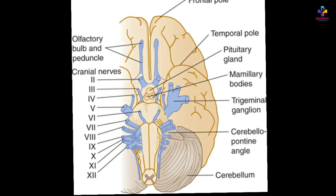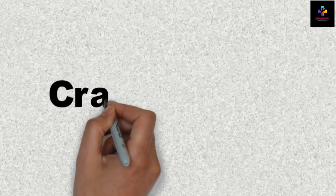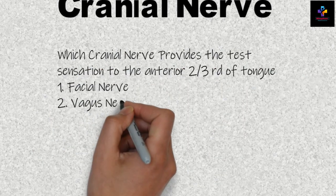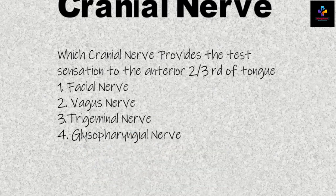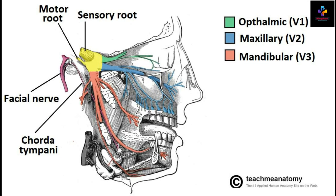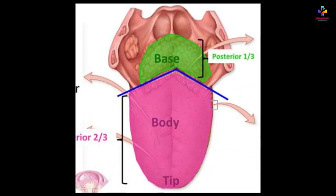The next question is related to the cranial nerve. Which cranial nerve provides the taste sensation from the anterior two-thirds of the tongue? Options are facial nerve, vagus nerve, trigeminal nerve, and glossopharyngeal nerve. The answer for this is trigeminal nerve. In the anterior two-thirds, general sensation is supplied by the trigeminal nerve.